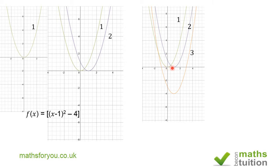Note here that we move from graph one, which is y equals x squared, one unit to the right and four units down. So that's the translation of one minus four.